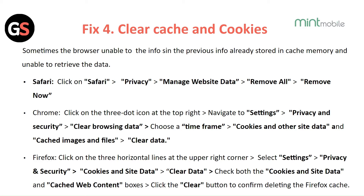For Chrome, click on the three dots icon at the top right corner. Navigate to Settings and Privacy and Security. Click on Clear Browsing Data. Choose the time frame and select Cookies and Other Site Data and Cached Images and Files. Then click on Clear Data.